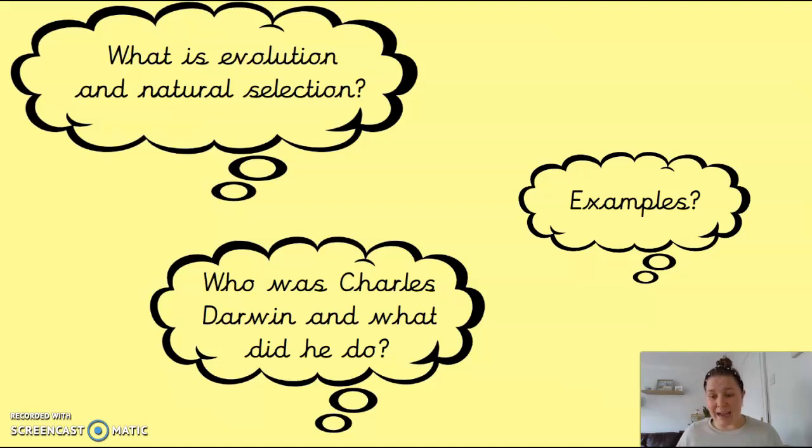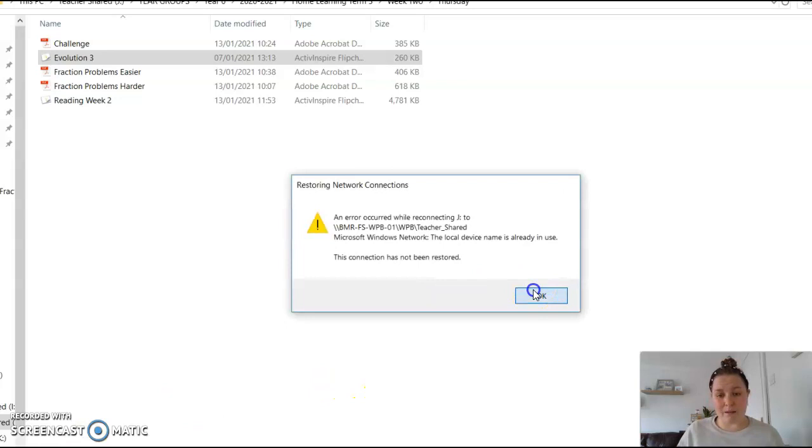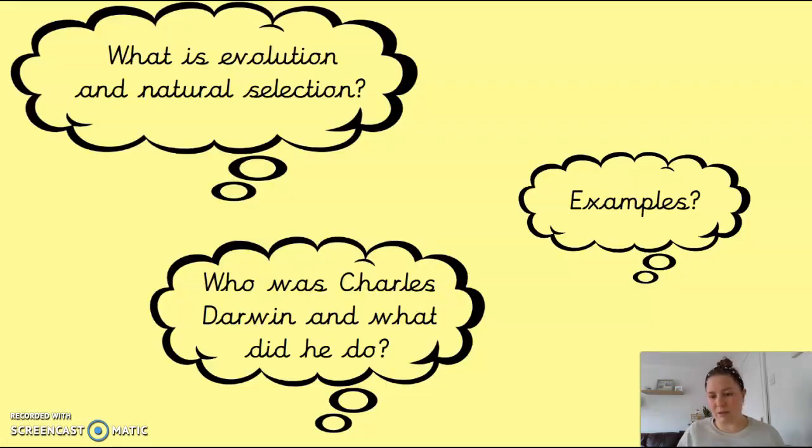He gathered evidence and decided that the best theory of evolution was this theory through natural selection and animals evolving over time. That was the best explanation for what he saw. So, in your Charles Darwin paragraph, that's the kind of thing that you could write about there. And he'd also written the book on the origin of species. And I showed you some pages from a kind of child's adapted picture book version of that as well.